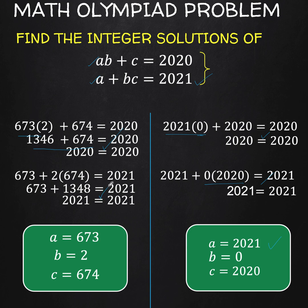It's verified that this system of equations has two sets of integer solutions. The first is A equals 2021, B equals 0, and C equals 2020. The second is A equals 673, B equals 2, and C equals 674. This problem is now solved. Thank you very much — this is Lando Assistant, and we hope to see you again in our next video.